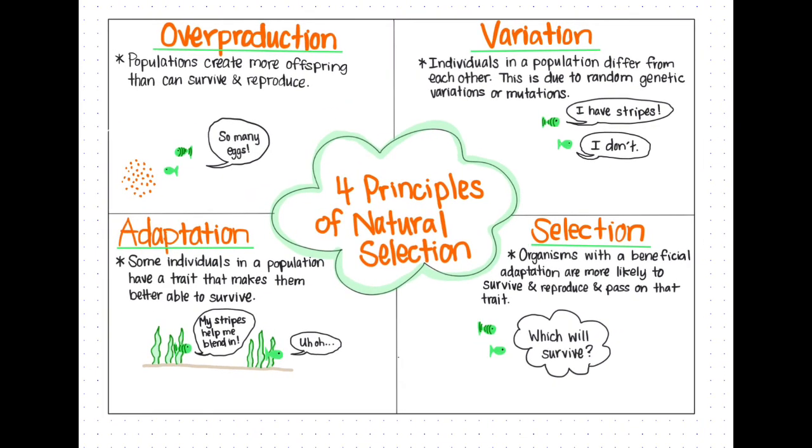So how does natural selection work? Populations create more offspring than can survive, and the offspring are not all the same—they have variations. Since they have variations, some will be better adapted or more likely to survive than others. The ones that survive are more likely to be able to have offspring and will pass on that trait. Because of all of this, populations can have changes in their traits over time. So that's how natural selection works—it works through these four principles of natural selection.